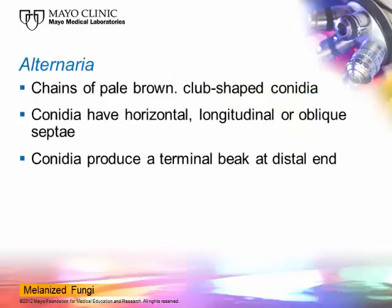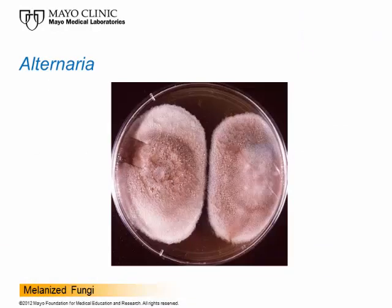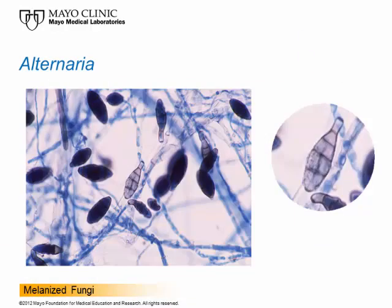Alternaria is a fairly easy one that probably all of you can recognize by sight. It produces chains of pale brown, club-shaped conidia in long chains with horizontal and longitudinal septations. The spore has a long beak at the distal end. Dr. Elmer Kahneman describes it as looking like a drumstick of ice cream. Here's a culture showing some pigmentation, and underneath the microscope you're looking at the conidia with both types of septations. The enlarged center image shows the beak at about 1 o'clock of the enlarged view.